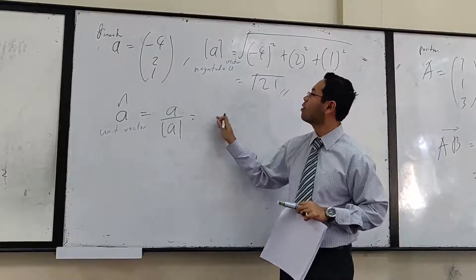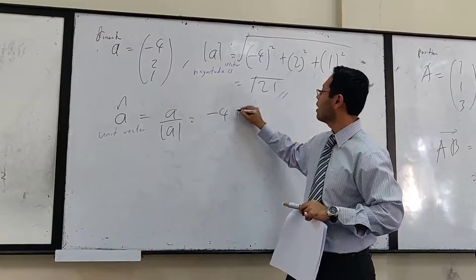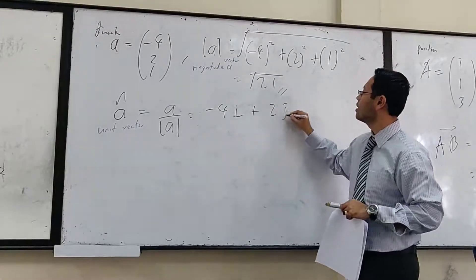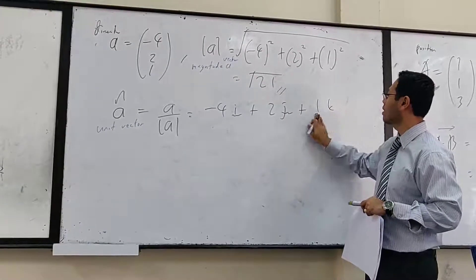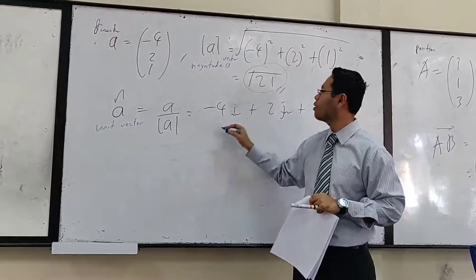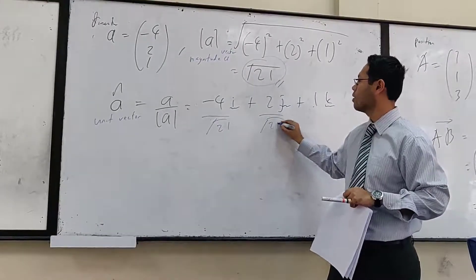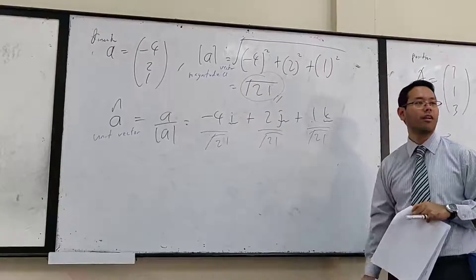Simply, A over A modulus. So what we got here? Negative 4 i wiggly, plus 2 j wiggly, plus 1 k wiggly. And this stuff, the magnitude, simply divide them. Simply over them.